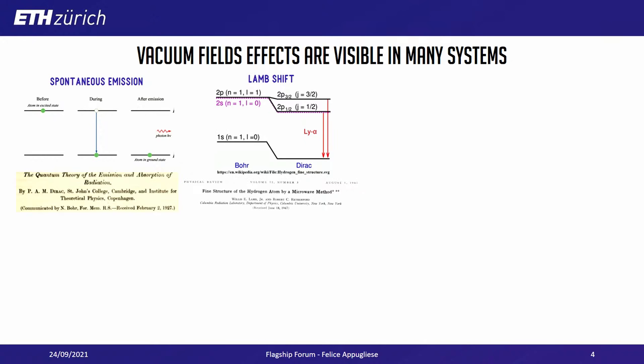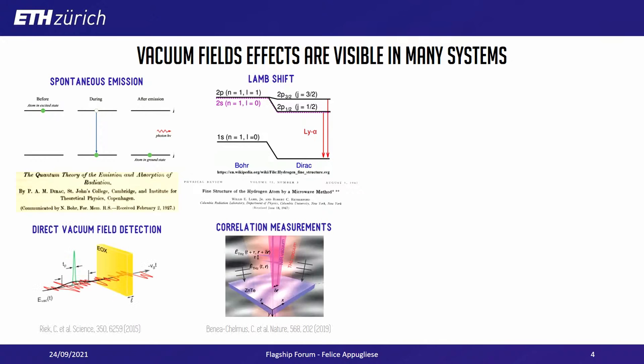There are other effects, like the Lamb shift, that can only be explained with vacuum. And there are more modern experiments where it was possible to directly detect the effects of vacuum fields by exploiting the very high sensitivity of detectors using electro-optic sampling. The message here is: vacuum is there, and we have to deal with it.